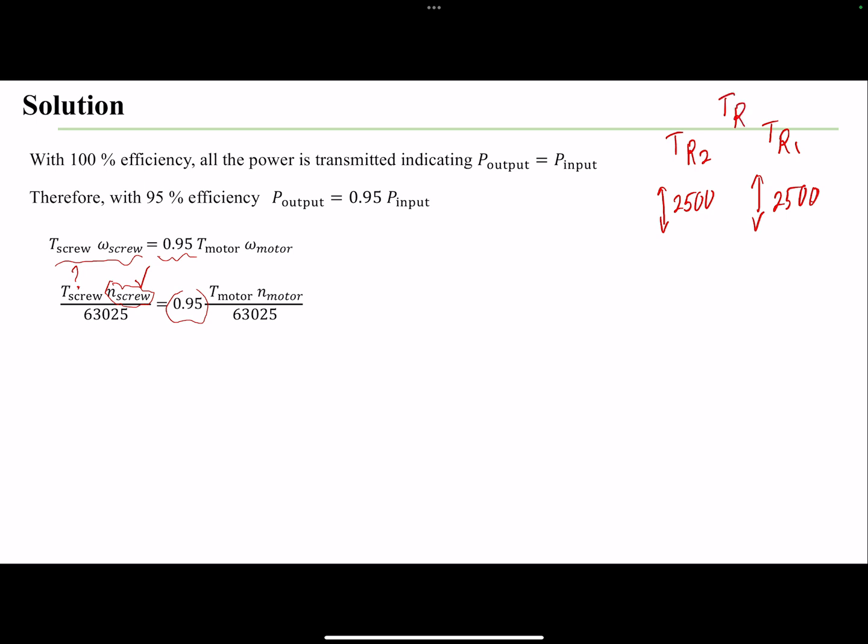So conceptually, we can divide it, find the corresponding torque and add the torque, or just not divide it from the very beginning, just call it 5000, and then directly we are going to find the torque.